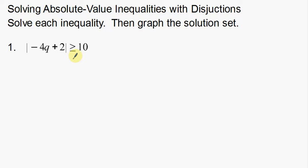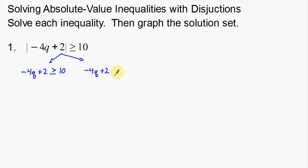The first thing I'm going to do is split this up. Notice that I have the absolute value on the left by itself and the numbers on the right, so that is in perfect position to split. The first split: I'm going to rewrite this as I see it without the absolute values — negative 4q plus 2 is greater than or equal to 10. Then for the second split, I write the left side as I see it, but the 10 becomes a negative 10, and remember — when we change a sign, divide by a negative, we have to flip the inequality symbol.